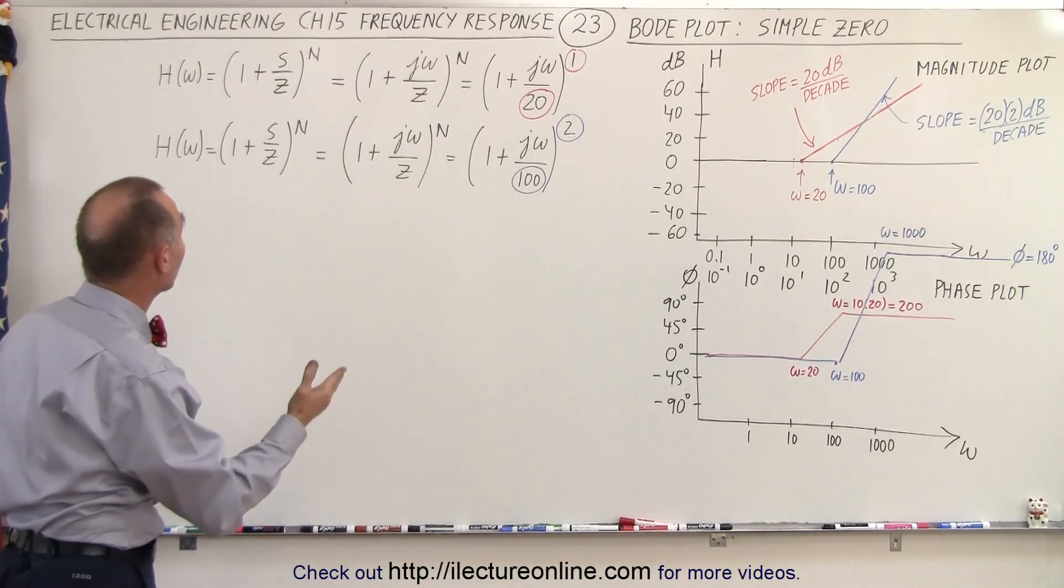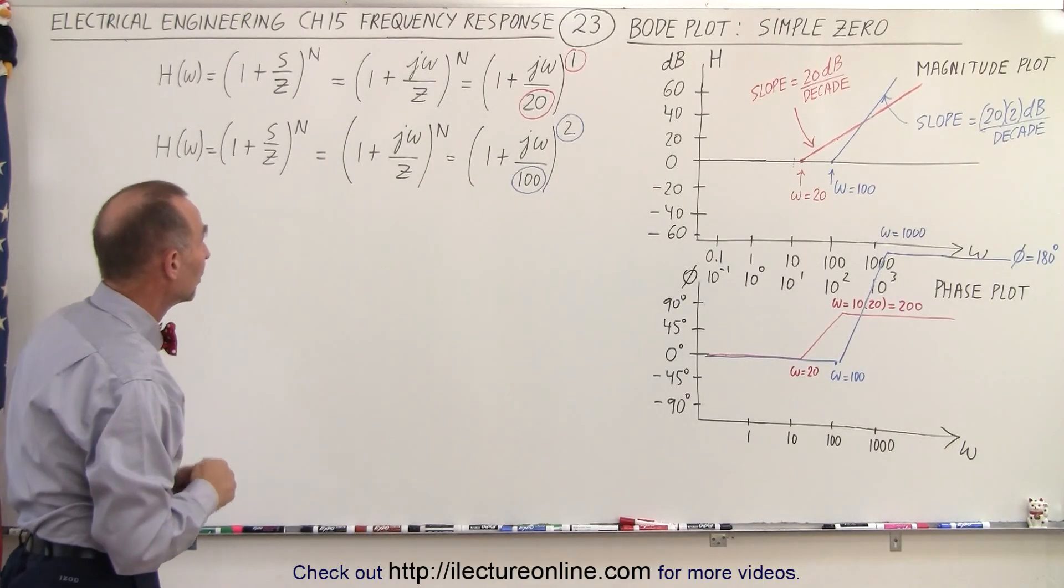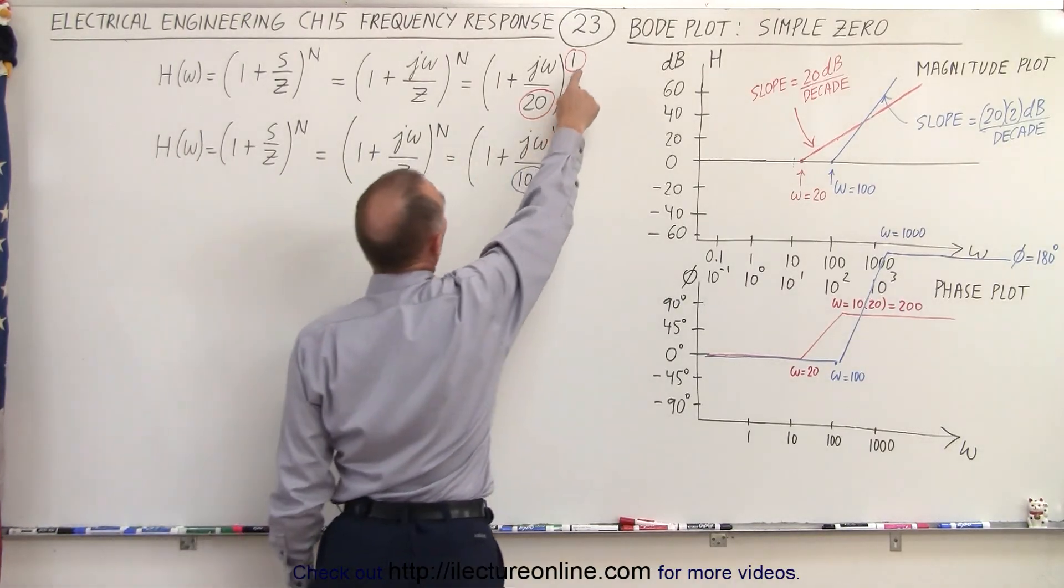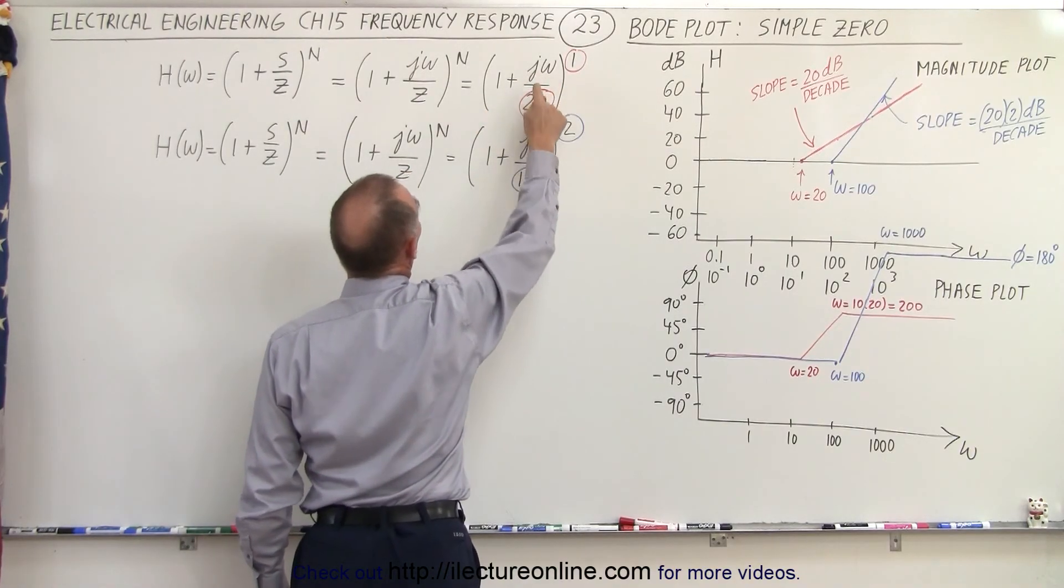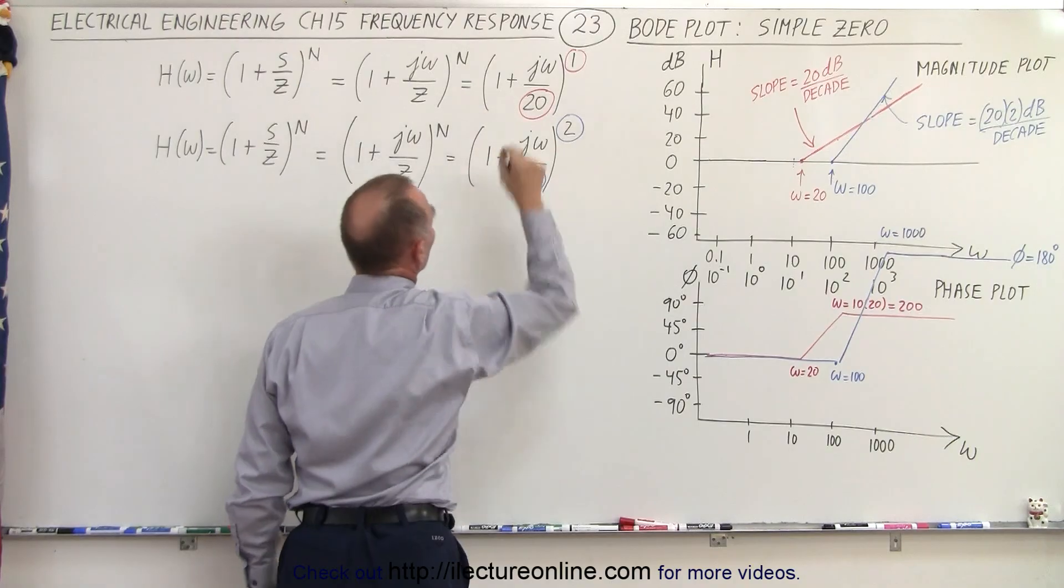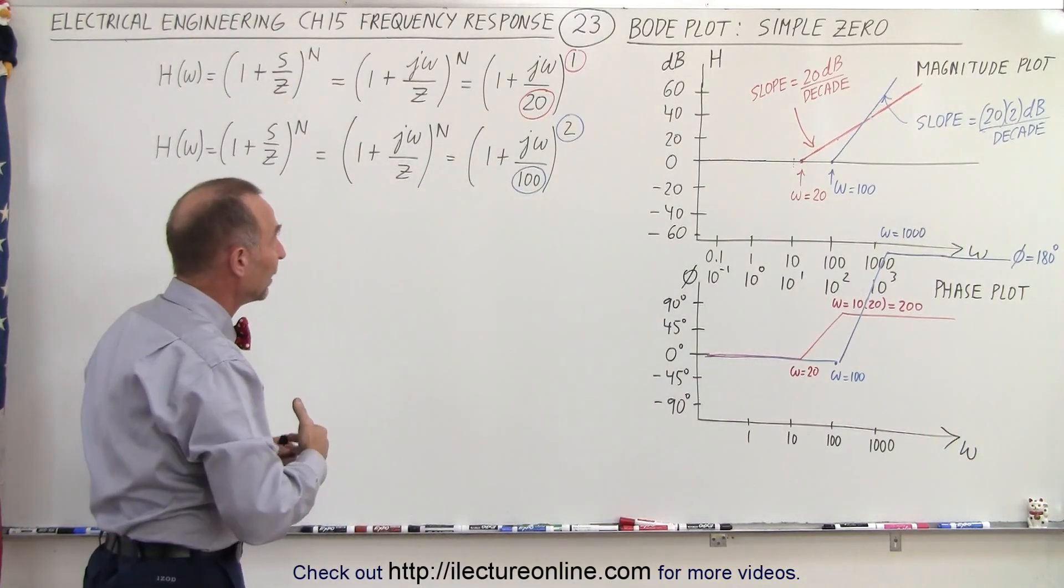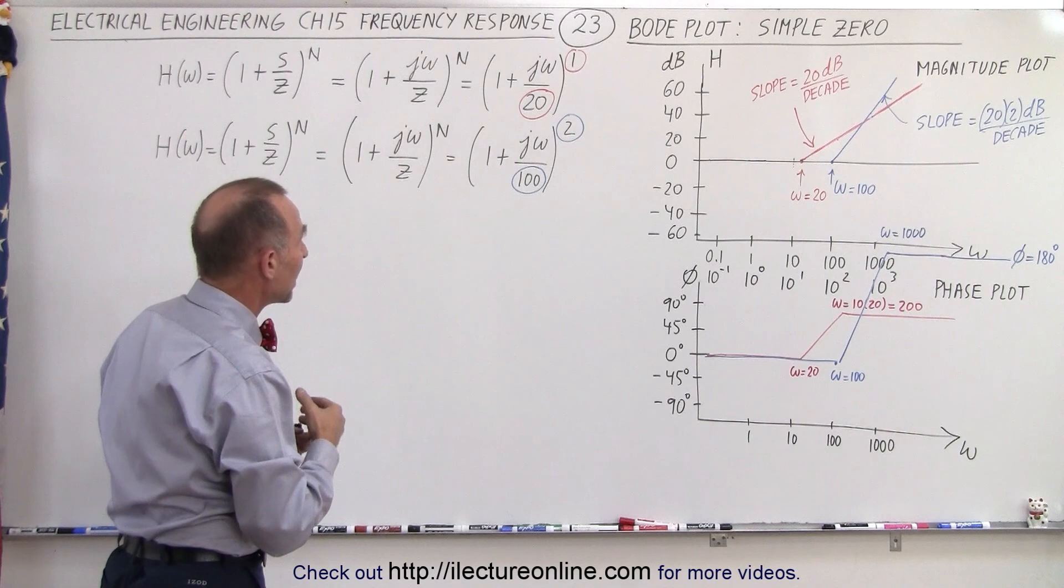Now n means the number of simple zeros. In this case we let n equals 1, and so it's simply going to look like 1 plus j omega over 20. Let z equals 20. So z is the location of the zero as the frequency of omega.